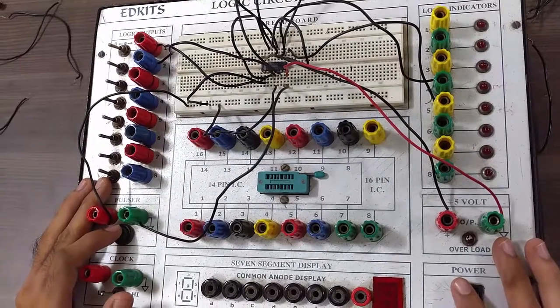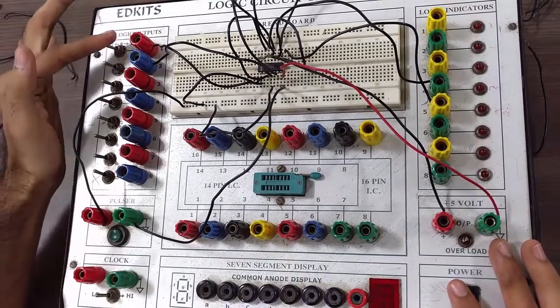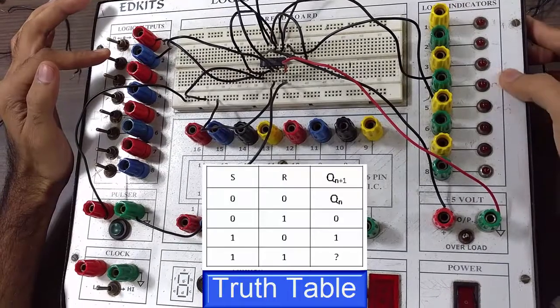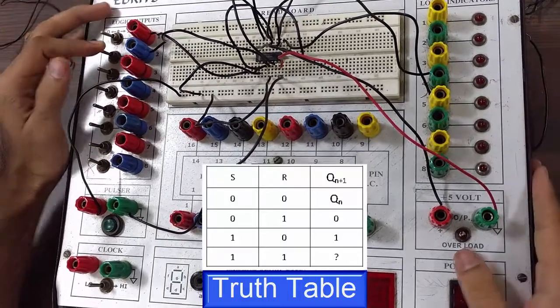Now let's verify the output. We have made the connection as we have discussed. Now this is the S input, this is the R input. This LED number 4 is Q and this is for Q bar. Let's just power it on.